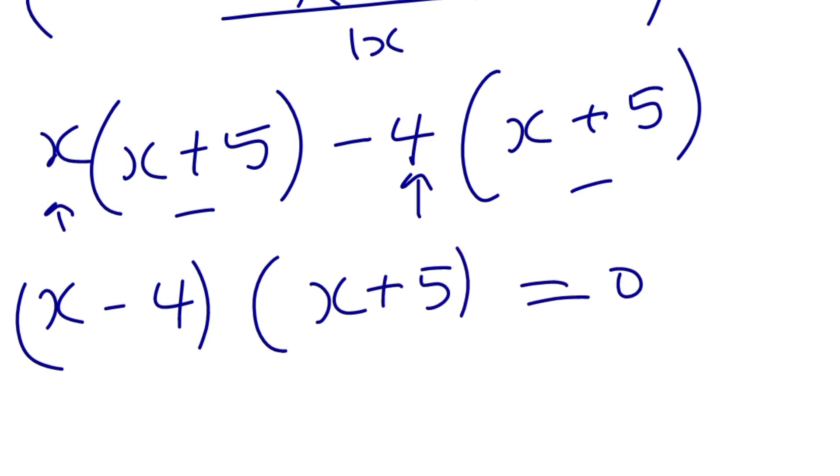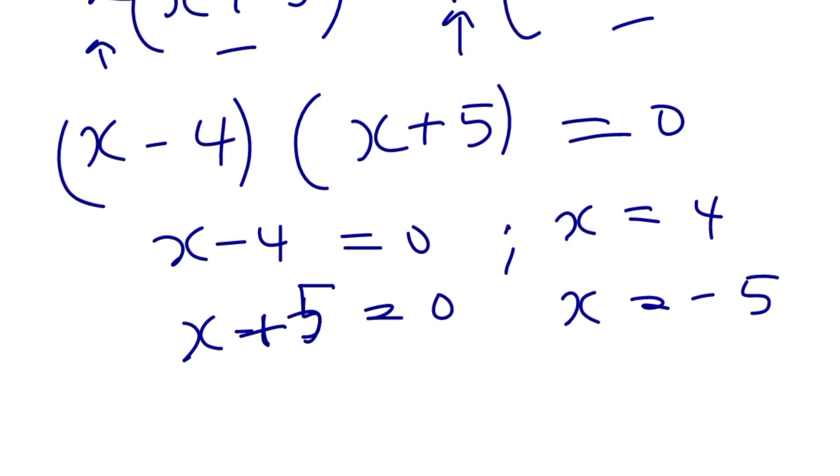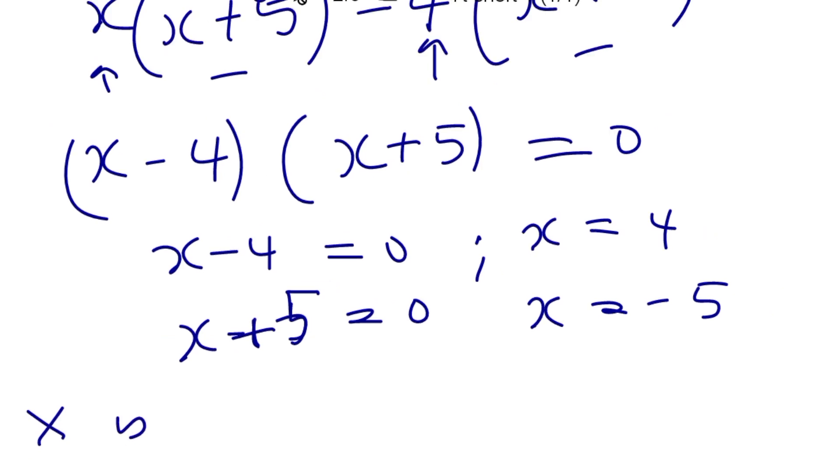So now we need to equate this to 0 since the question is to find for what value of x is the expression going to be undefined. So x minus 4 equals 0 and also x plus 5 equals 0. So therefore x equal to 4 in this case, and x equal to negative 5 in this case. Therefore the value at which x is undefined is x equal to 4 comma negative 5.